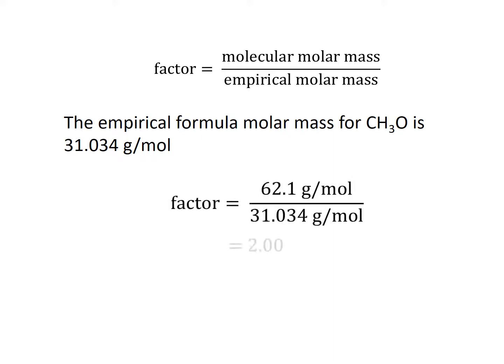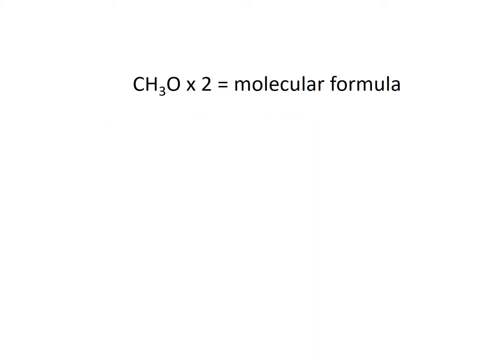Once we have the factor, we would multiply that by the empirical formula to determine the molecular formula. We would take our empirical formula and multiply all the subscripts by 2, which is the factor, and that will give us the molecular formula. So our molecular formula is C2H6O2.